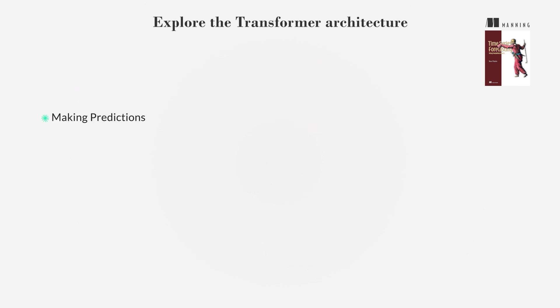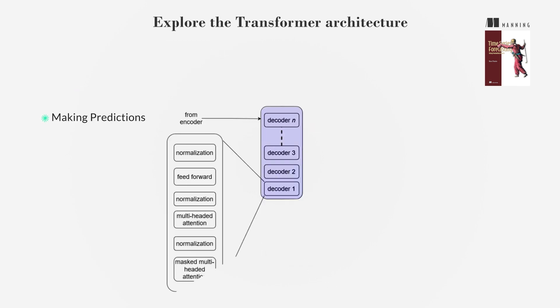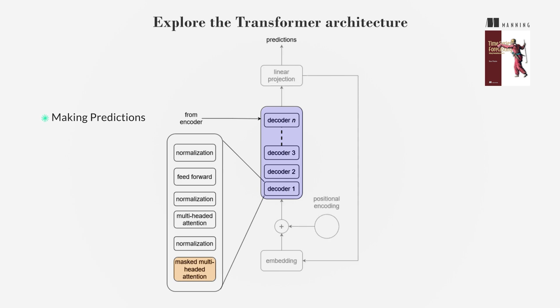The decoder uses a masked multi-headed attention layer to generate predictions, informed by the encoder's output, until the forecast horizon is complete.